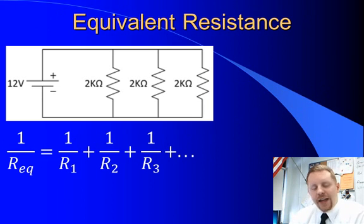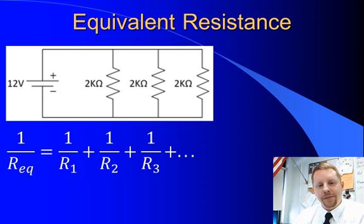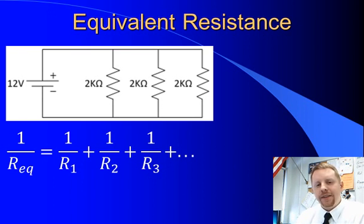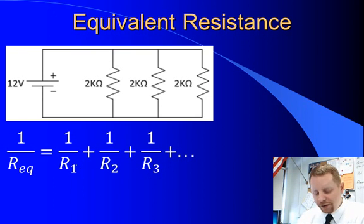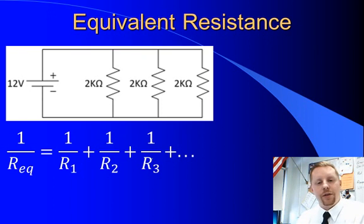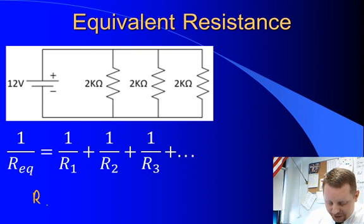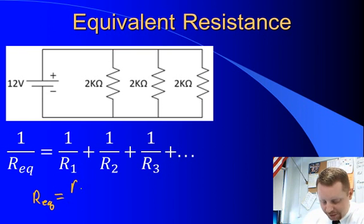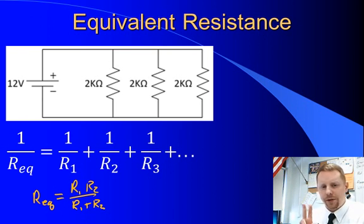When we talk about resistors in parallel, we can calculate an equivalent resistance just like we did for resistors in series. For resistors in series we just added up the resistors, but when we have resistors in parallel it's a little bit more complicated. What we do is: 1 over the equivalent resistance equals 1 over R1 plus 1 over R2 plus 1 over R3, and so on for however many resistors you might have. A trick: if you only have 2 resistors in parallel, a shortcut formula says the equivalent resistance is R1 times R2 over R1 plus R2. That formula only works if you have 2 resistors in parallel, but it may save you some work.